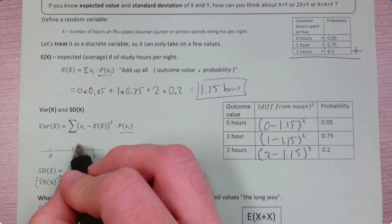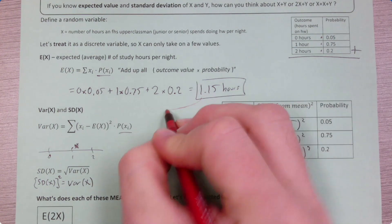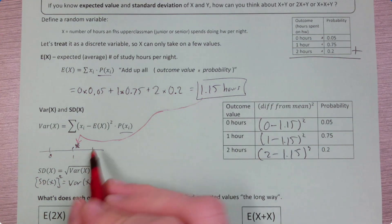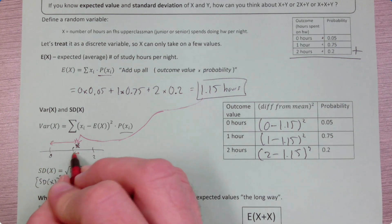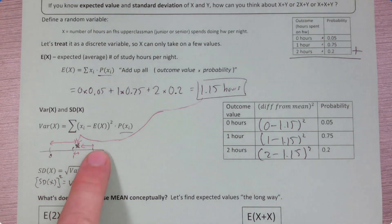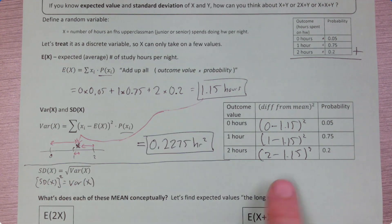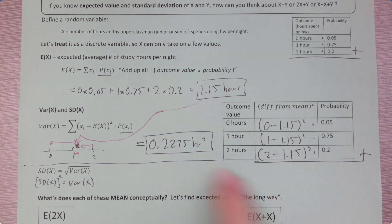You can also imagine these graphically. If this is 0 hours, 1 hour, 2 hours, and here is our expected number 1.15, what we're multiplying by the probability would be the distance from each outcome to the expected value — each of those distances squared, because that's what xᵢ minus E[x] means. When you multiply those pairs and add them up, you get 0.2275 hours squared.